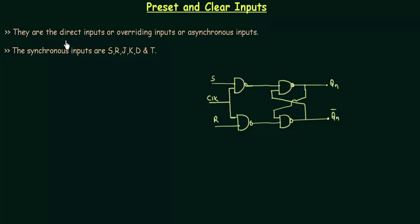They are the direct inputs, or overriding inputs, or asynchronous inputs. I am calling them overriding inputs because whenever they come into picture, they will change the output. The QN will be changed directly. It will not see what is the value of S and R, what is the value of clock. It will give a predefined value whenever these preset and clear inputs come into the picture. Therefore I am calling them the overriding inputs.